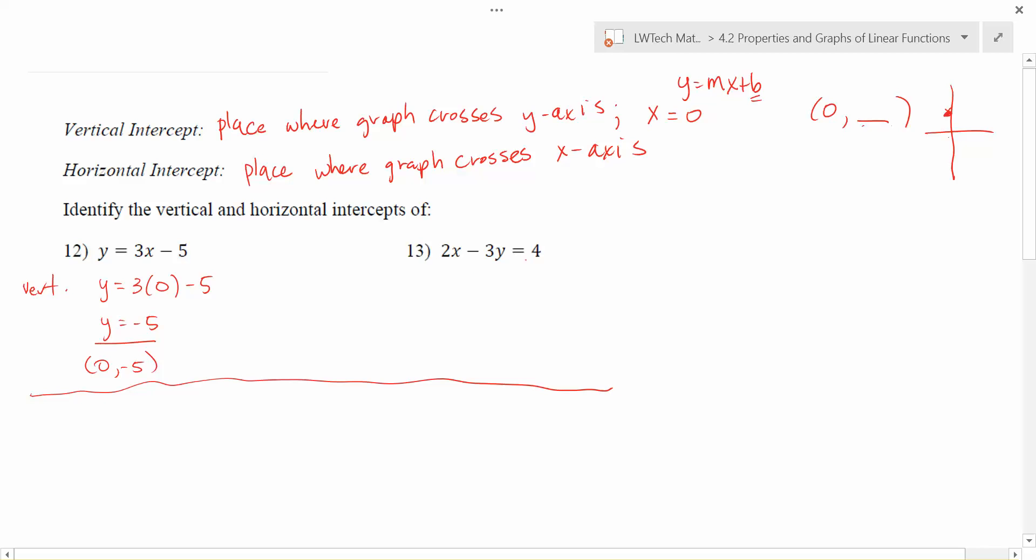In this particular example, in number 12, notice that this was in the form y equals mx plus b, and our b-value was negative 5, which ended up being exactly the same thing as when we solved. So just kind of a nice heads up front.